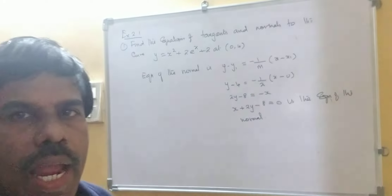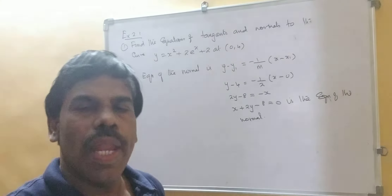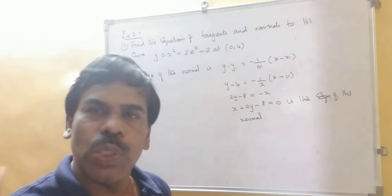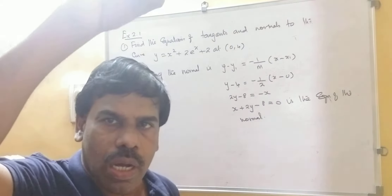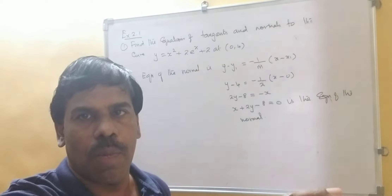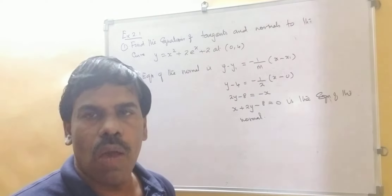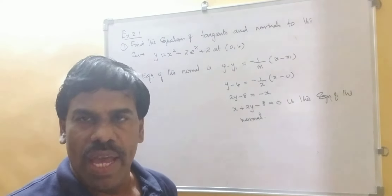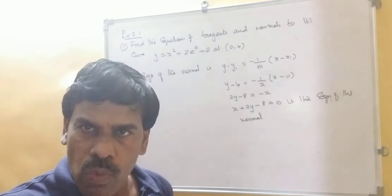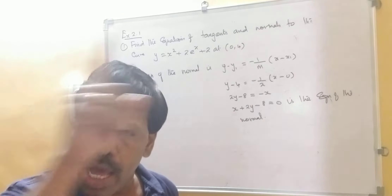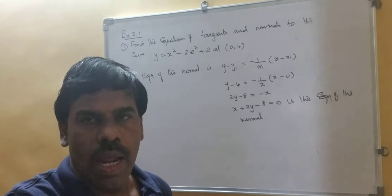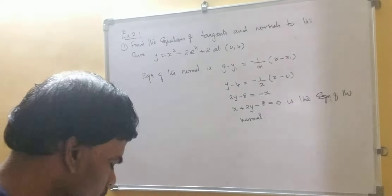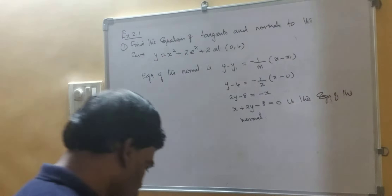For any function, if you are asked to find out the tangent to that particular curve at a particular point, the formula is y minus y1 equal to m into x minus x1, wherein x1 and y1 are the point where you have to find the tangent, and m is the slope of that particular function. Let us do one more example and we will understand better.